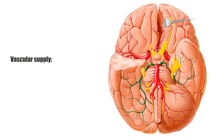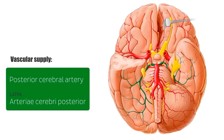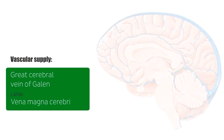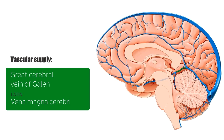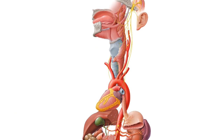Oxygenated blood to the pineal gland is provided via fine branches of the posterior choroidal arteries, which are derived from the posterior cerebral artery. The posterior cerebral artery comes off the basilar artery. Deoxygenated blood is drained by the internal cerebral veins, which join with the basal vein of Rosenthal and the posterior mesencephalic vein to form the great cerebral vein of Galen, which in turn drains to the straight sinus.